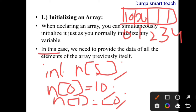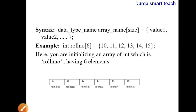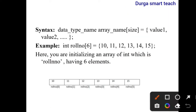In this case, we need to provide the data of all elements of the array previously. In the program itself, you need to initialize the variables. The syntax for initializing array variables is: data type, array name of size, equals to value 1, value 2, up to value n.